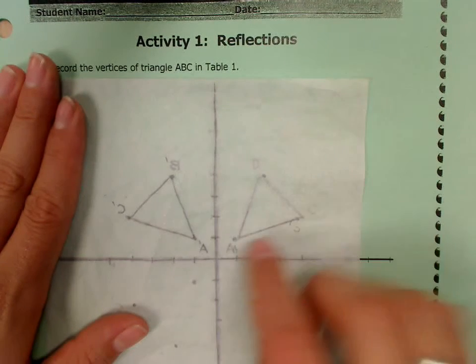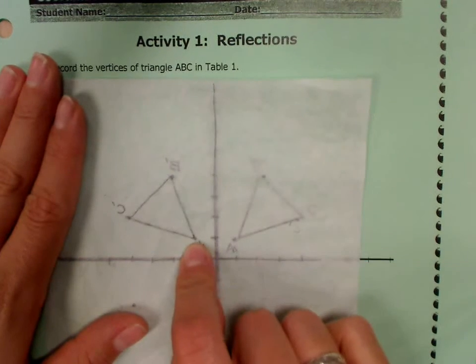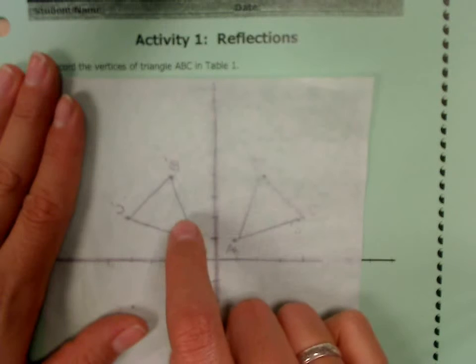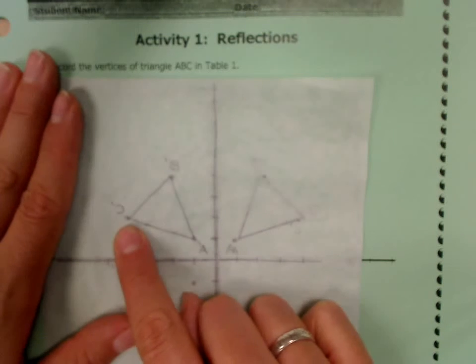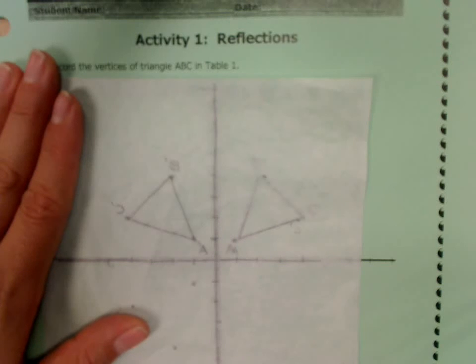So I'll give you a moment to go ahead and do that. You're writing down the coordinates for A prime, B prime, and C prime on table one. When you're finished with table one, stand up please without talking.